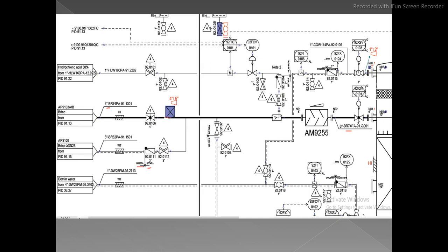The line number format is not fixed — every project may have a different method. But the approach is always the same: check the legend sheet. The legend will show you the serial code, unit code, and fluid service abbreviations, so you can identify what each part of the line number means.